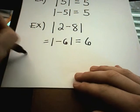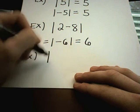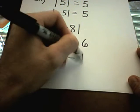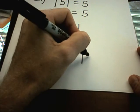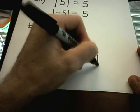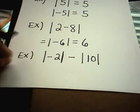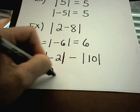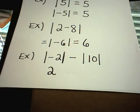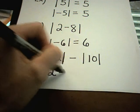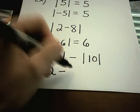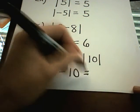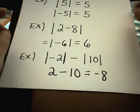Suppose I have the absolute value of negative 2 minus the absolute value of 10. Alright, well, the absolute value of negative 2 just turns into positive 2. The minus sign stays the minus sign. It's not inside the absolute value bars. And then the absolute value of 10 is 10. And 2 minus 10 equals negative 8. And that's your solution.